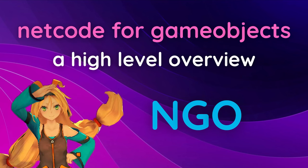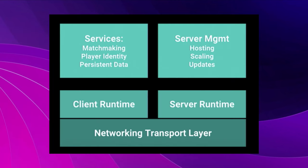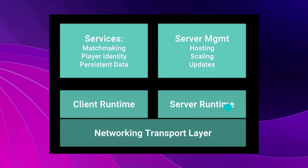That's a basic overview of networking concepts. Now we'll be going over NGO — Netcode for Game Objects — Unity's new multiplayer solution. For a quick overview: the client and server run on Netcode for Game Objects, then we have Unity's Network Transport Layer to send information between client and server, and Unity provides extra services like matchmaking, identity, persistent data, and server management including hosting, scaling, and updating servers. Netcode is generally recommended for smaller to medium sized games — for super complicated physics or lots of players, look into Netcode for Entities with the ECS/DOTS structure.